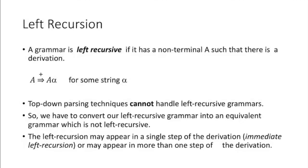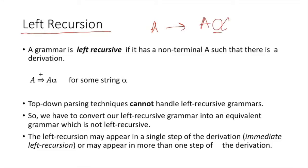I'm going to start from left recursion right now. I think you remember what is left recursion. When we call some grammar a left recursive grammar — when you find that the same symbol is arriving on both sides of the arrow. Left recursion happens when you get something like A to A alpha. This alpha can be anything — any combination of terminals and non-terminals.